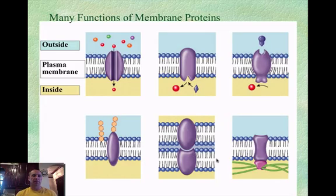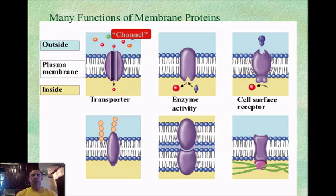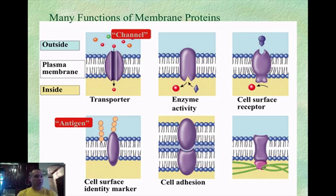There are many functions that membrane proteins can serve. First, as a transporter or channel, allowing things to move back and forth across the membrane. They can also act as an enzyme, where something hooks into the protein and gets released. On the outside, they can serve as a cell surface receptor, capturing certain things and releasing them inside the cell. They can act as a cell-identifying marker — important in the immune system as an antigen, helping the body recognize something as foreign or self. They can also hook one cell to another for communication, and attach the cytoskeleton to the plasma membrane to hold the whole cell together.